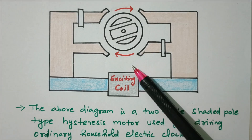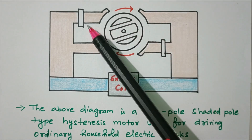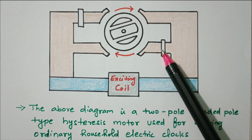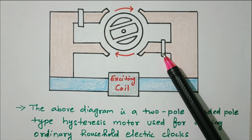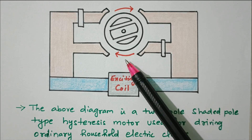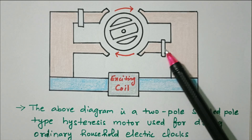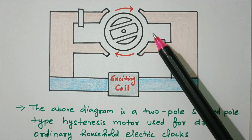This is the hysteresis motor. The rotating part — the rotor — is available. These are the stator with four coils and four poles. This is the shaded pole, diagonally opposite. When current is flowing, some of the flux is linked with the shaded pole. Due to that, current flows through the shaded coil and an EMF is induced in the shaded coil, having a 90-degree phase difference with the main flux.